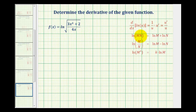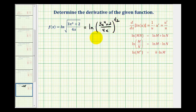But what we can do is apply the property of logarithms to rewrite the function so it's easier to determine the derivative. The first thing we should recognize is that we can rewrite the square root as a rational exponent — this would be the natural log of the quotient raised to the one-half power. And now in this form, we can apply the power property of logarithms, where we take the exponent and move it to the front and multiply it by the natural log. So we can write the function as f of x equals one-half times the natural log of the quotient.